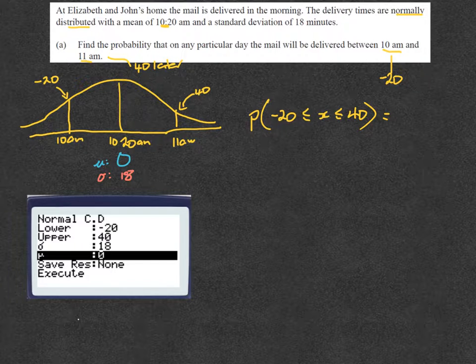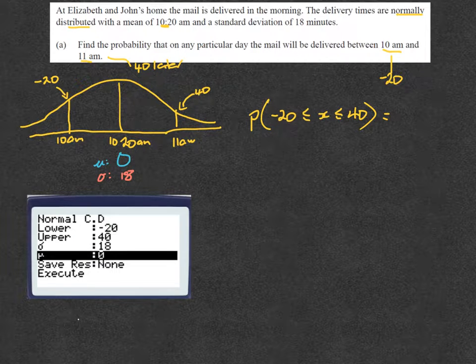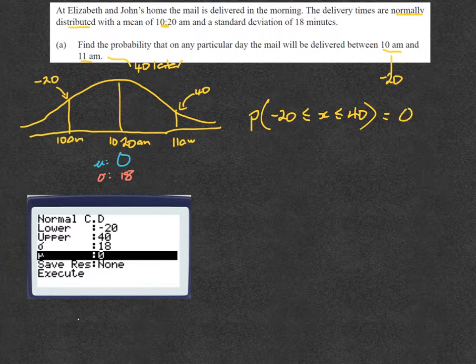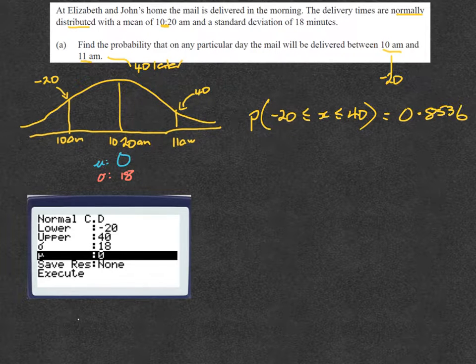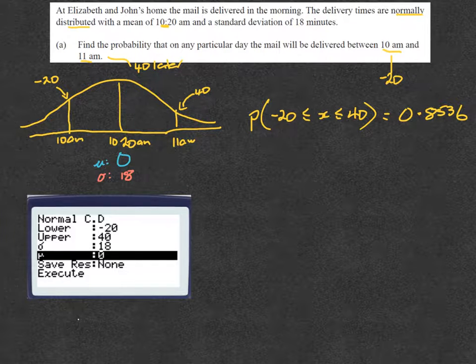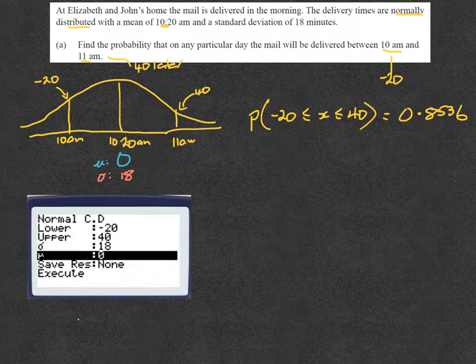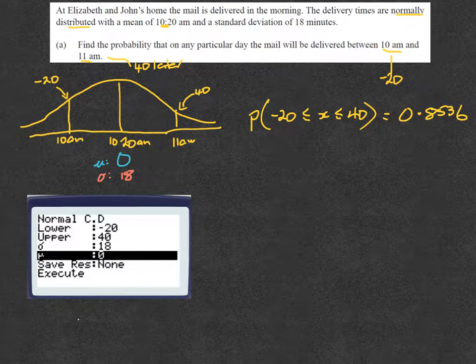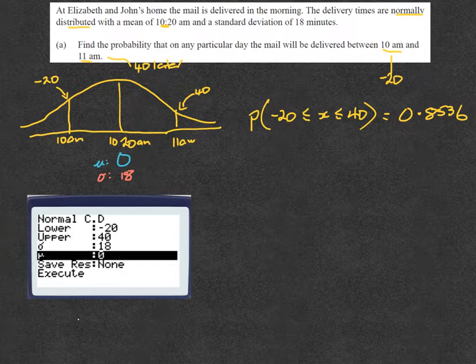And you would come up with an answer of 0.8536, and that's your answer. So the probability that the mail will be delivered between those times is 0.8536.